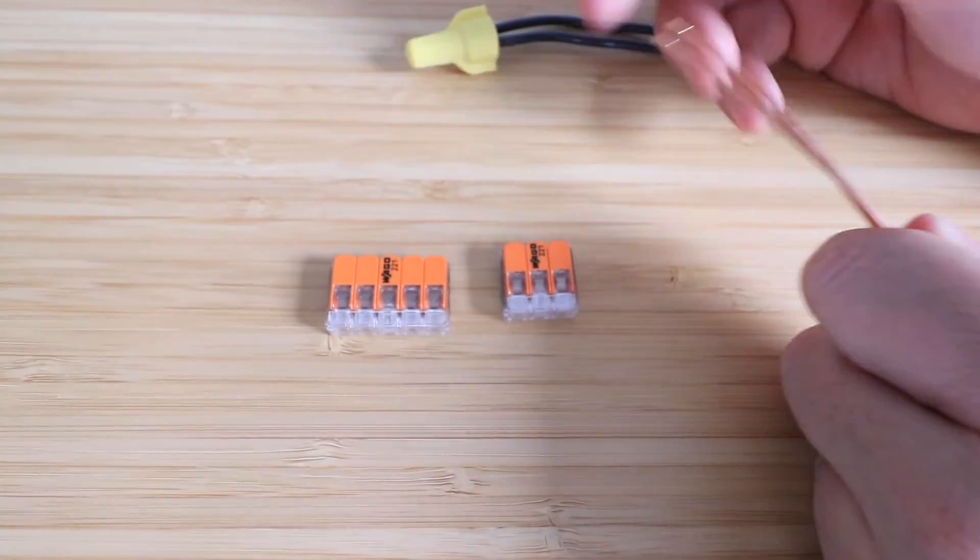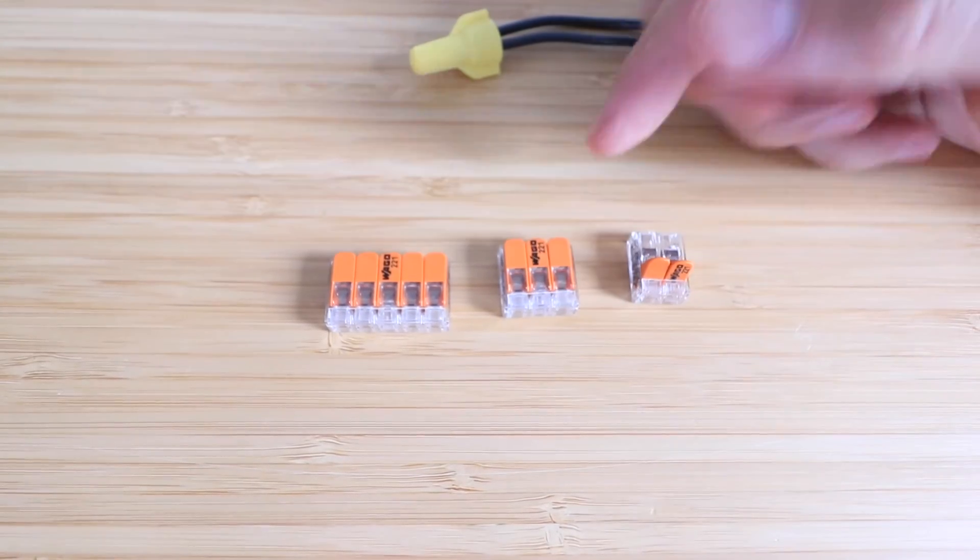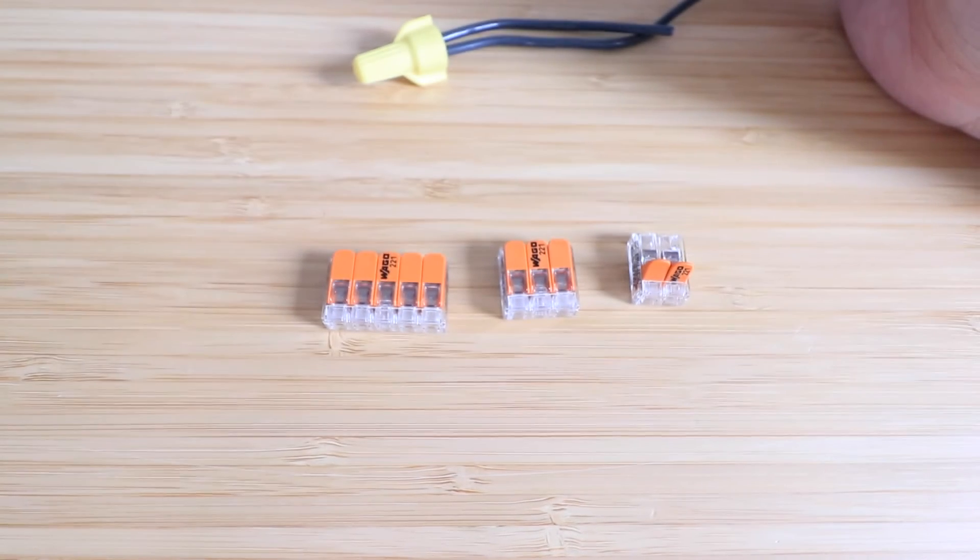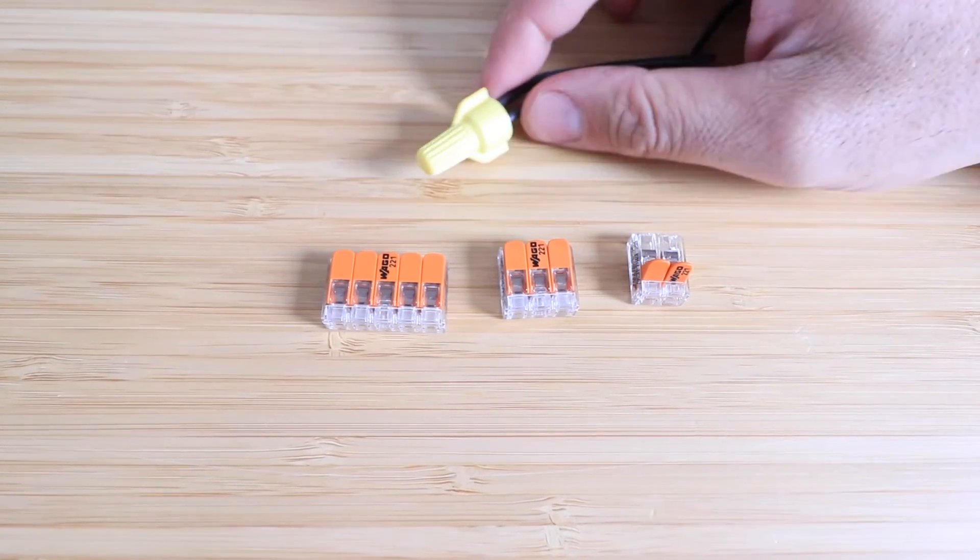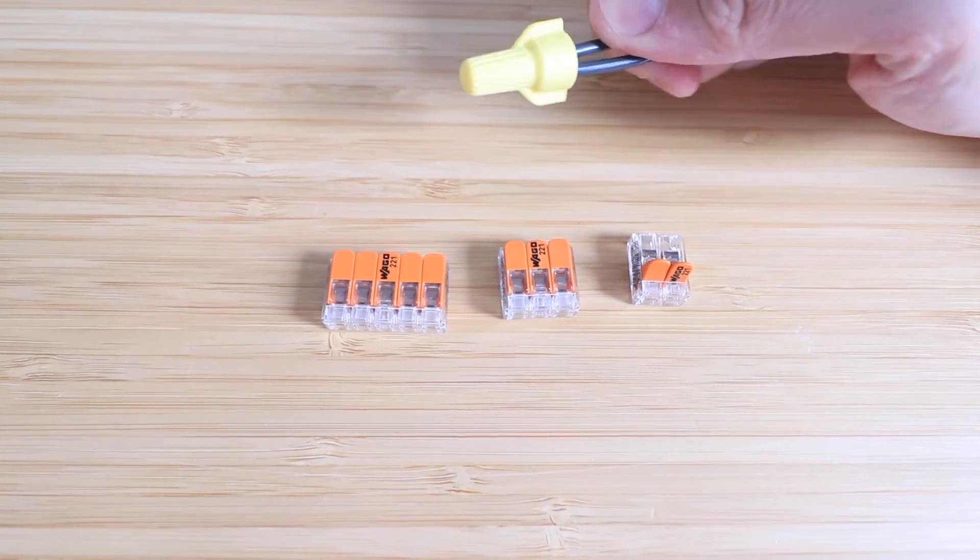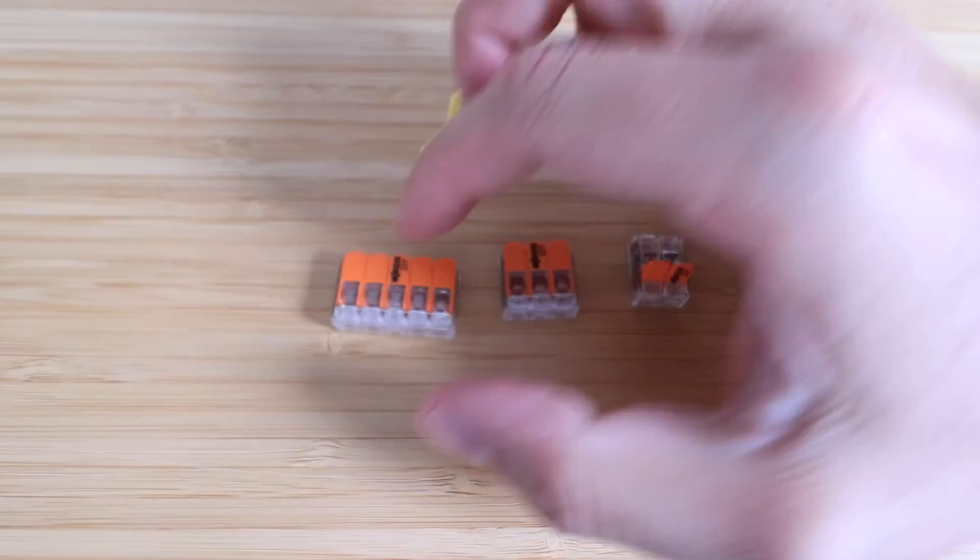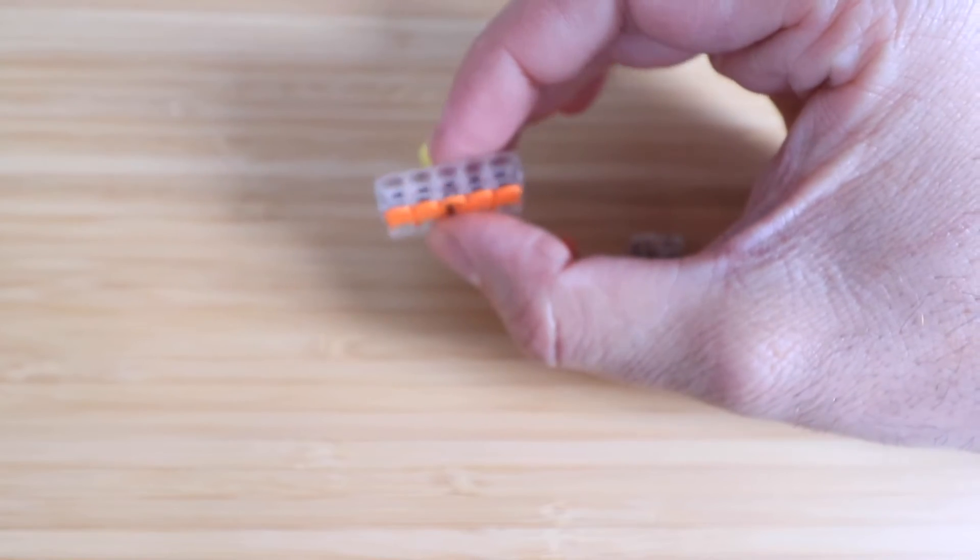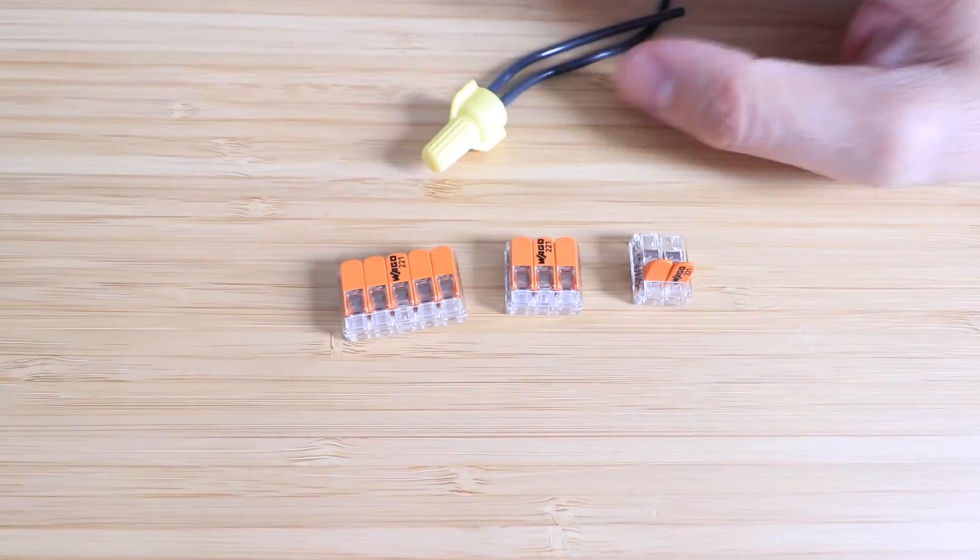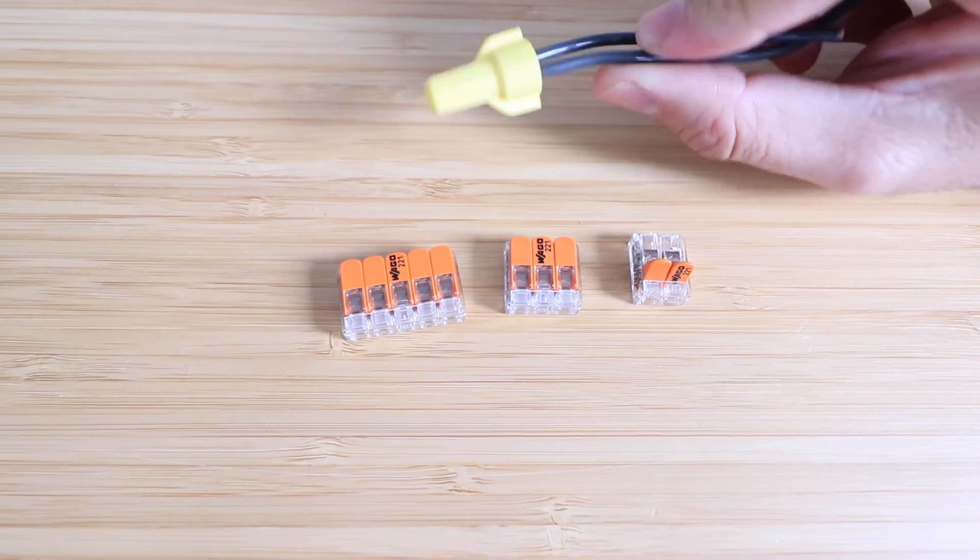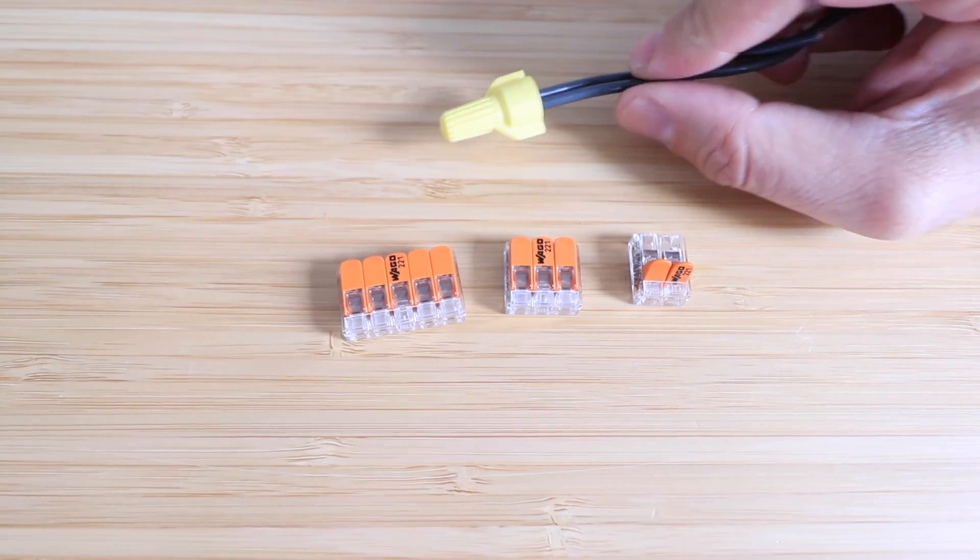But where I find the Wago lever wire nuts most useful is when I'm putting a whole bunch of wires together. So right here, you could put five wires together. And with these connectors, you've got to probably move up to the next size to put five together. But it's much easier to put five wires in this Wago lever wire nut than it is to put five wires into a traditional wire nut and try and screw those together.